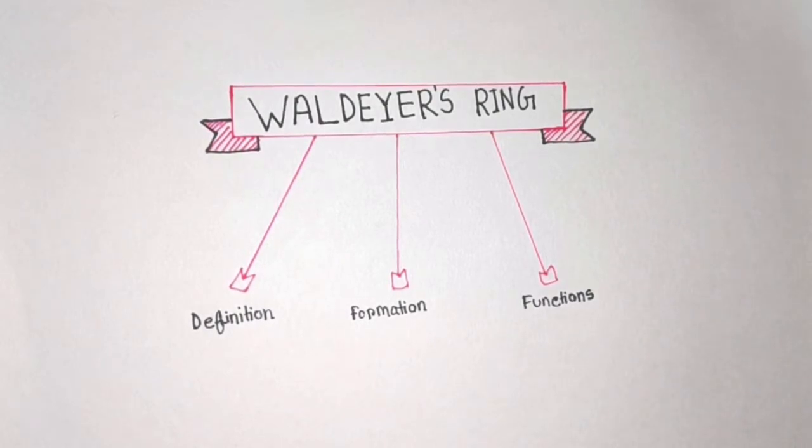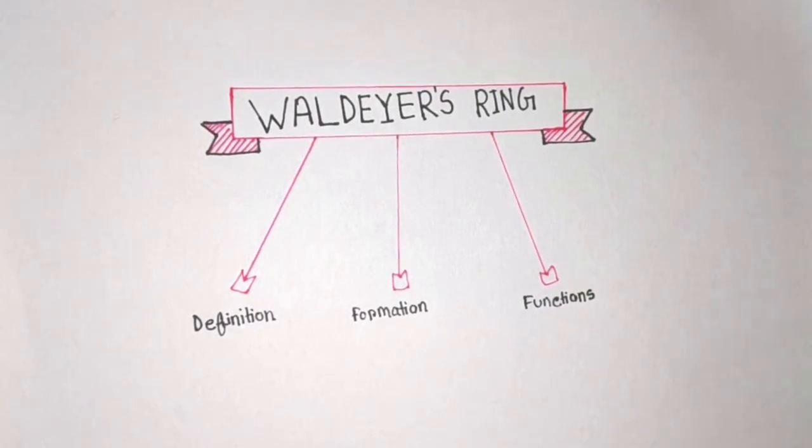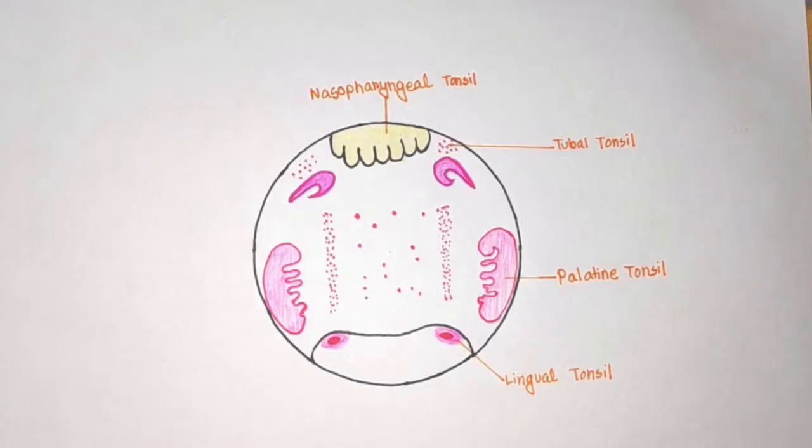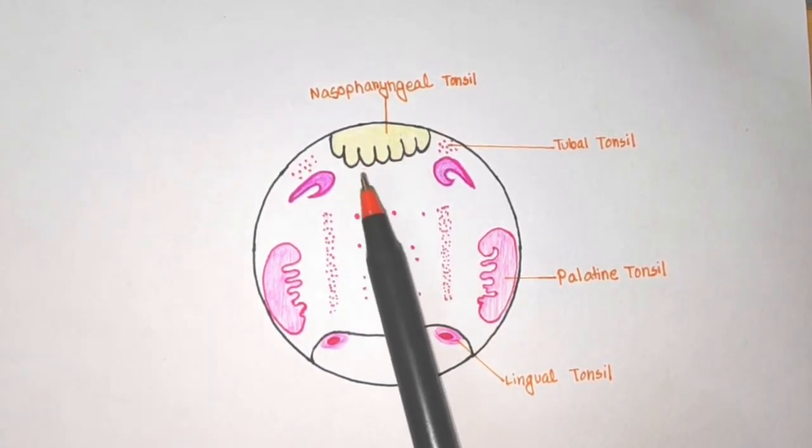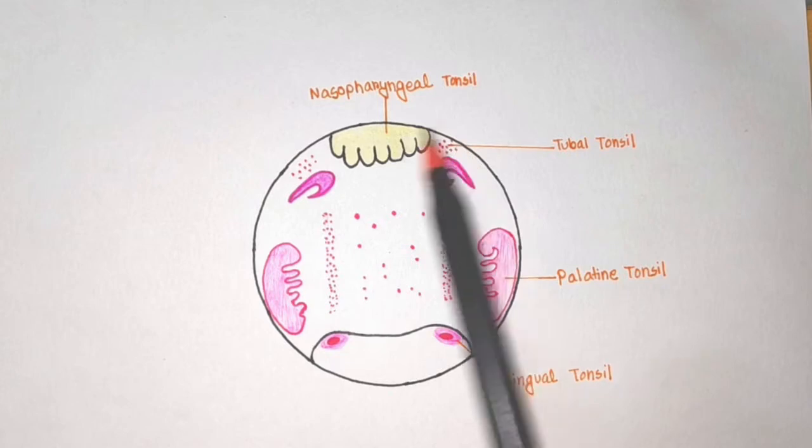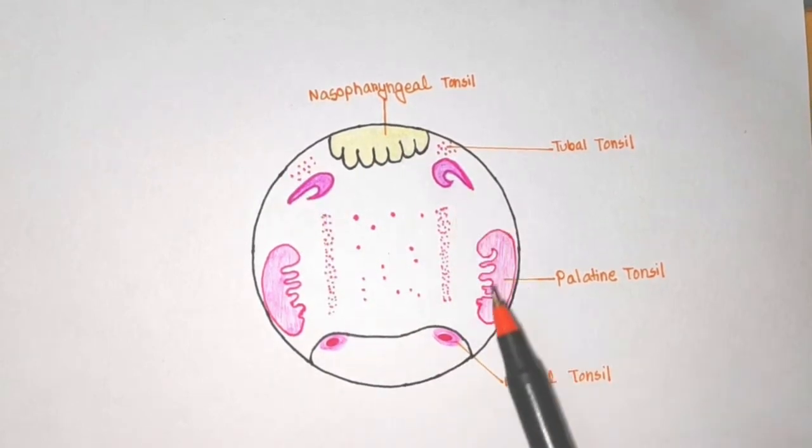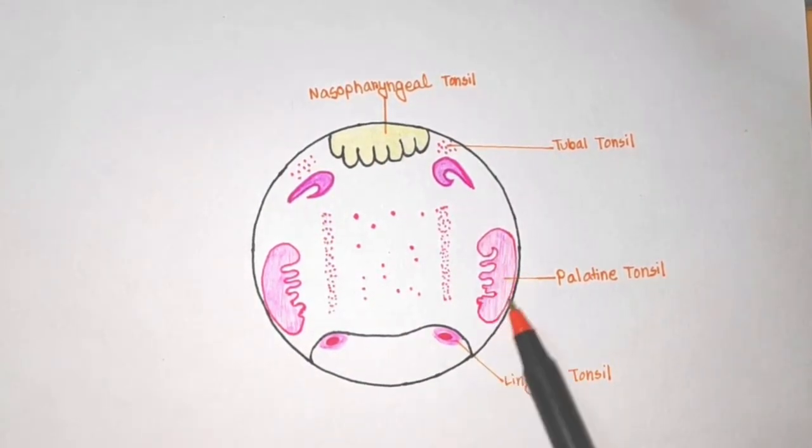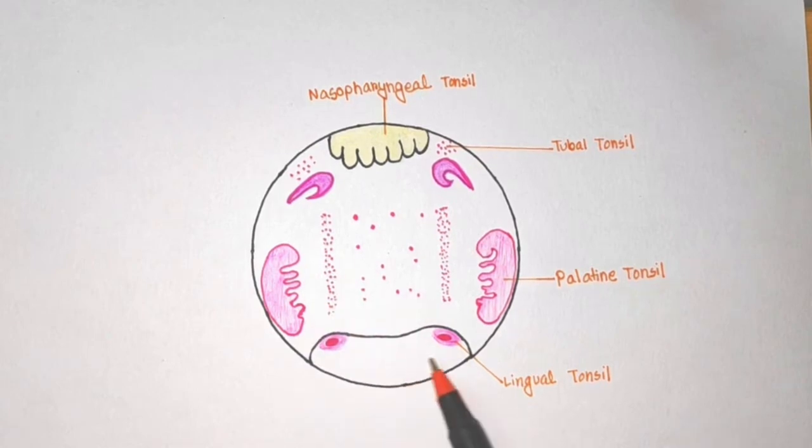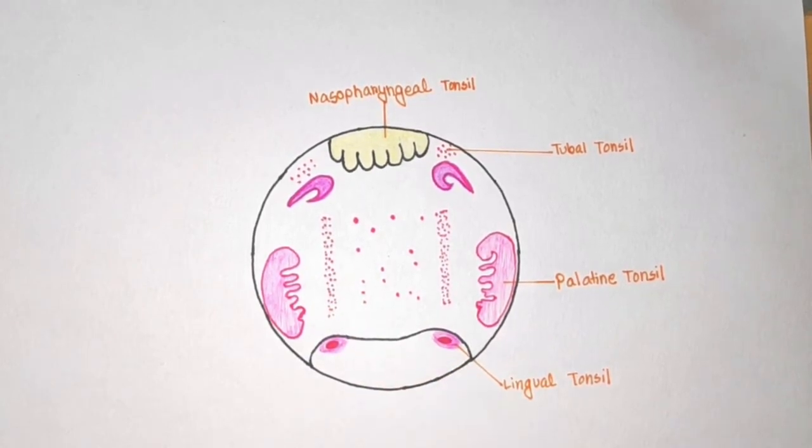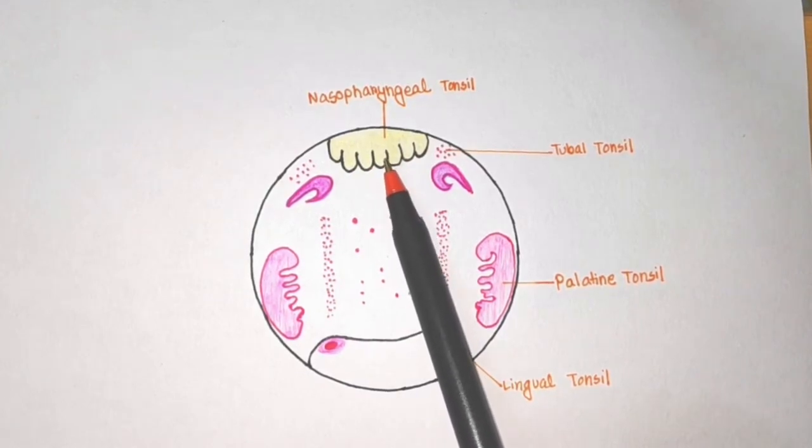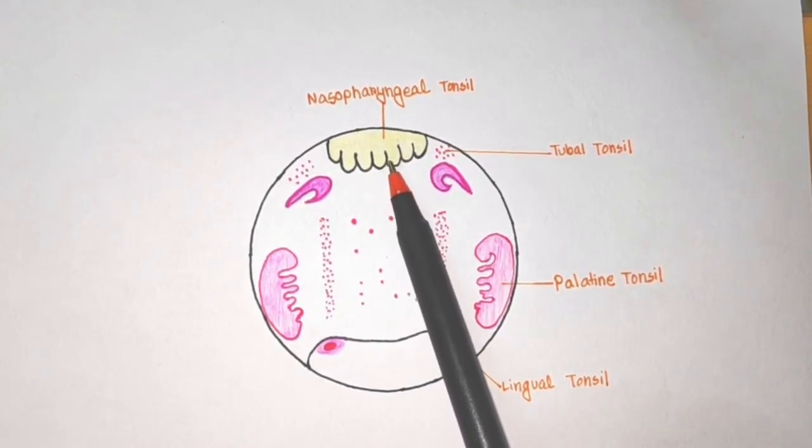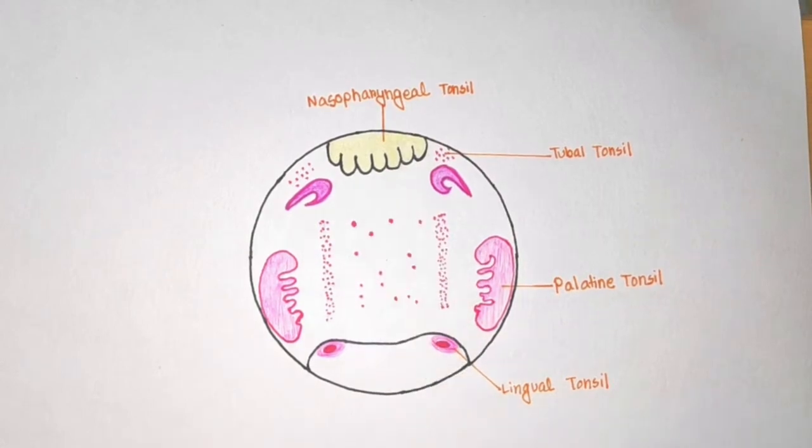Now I am going to show you a picture of Waldeyer's ring. The formation of Waldeyer's ring consists of the nasopharyngeal tonsil you can see here, two tubal tonsils on each side, palatal tonsils on each side, and the lingual tonsil. The nasopharyngeal tonsil, when it is enlarged, is also called adenoid.